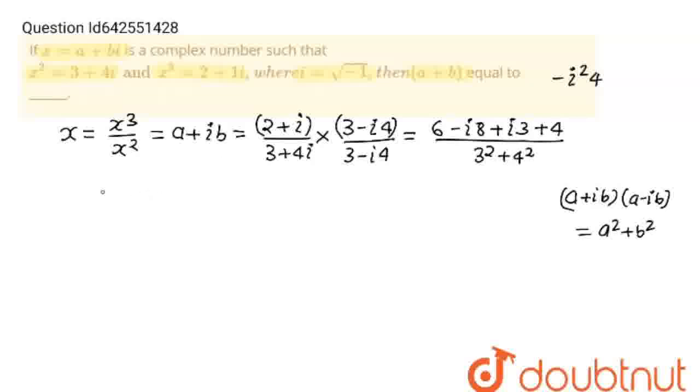6 plus 4 will become 10. So a plus iota b will be equals to 10 minus, minus iota 8 plus iota 3 will become minus iota 5 upon 25.